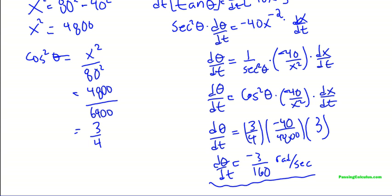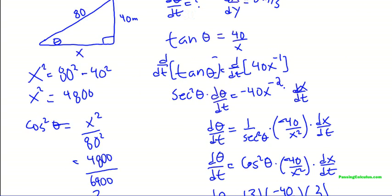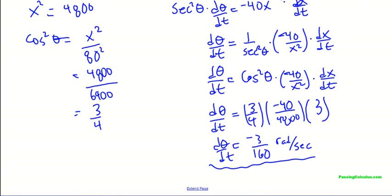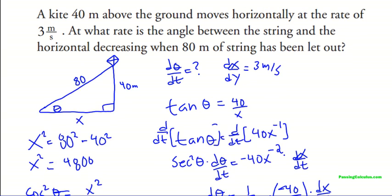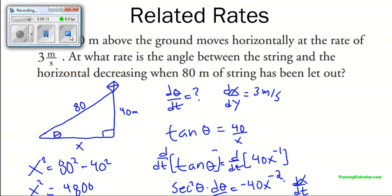If I was on a test, I would write a concluding statement that would say the angle is decreasing at a rate of 3 over 160 radians per second. So this is a great question guys. Make sure you know how to do this for your calculus courses. If you've got any more questions, feel free to comment. Thanks for watching. See you guys in class. Peace.